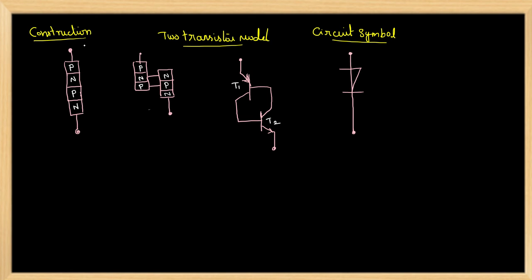This is the construction of Shockley Diode. This construction is very simple. It is constructed by joining four layers to form a PNPN diode. It has two terminals, anode and cathode, and three junctions J1, J2 and J3.